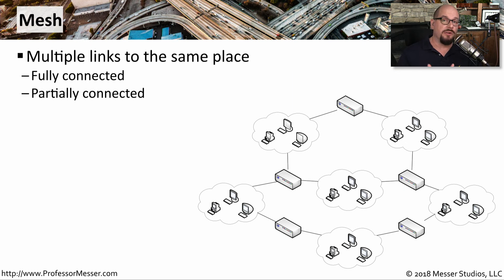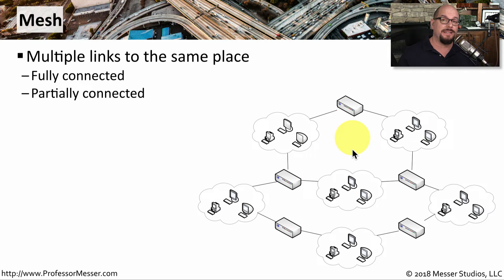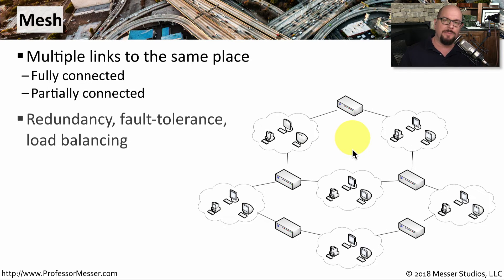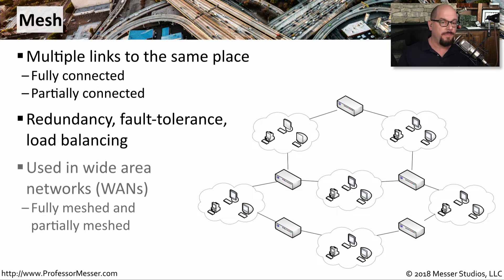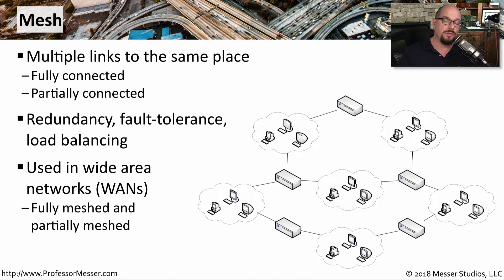For even additional fault tolerance, you may want to consider implementing a mesh network. This is one that has many different links to be able to get to the same place. It might have all of the different locations connected to every other location, or it might be a partial link where some locations are connected to others. You would commonly implement a mesh network if you were looking for something redundant and fault tolerant, or if you needed to balance load between multiple links. You often see mesh being used in wide area networks, where there are many opportunities for a link to go down and you need redundancy to route around the problem.